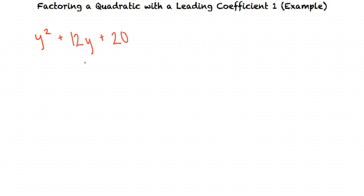This is an example video for factoring a quadratic with a leading coefficient of 1. If we're given the quadratic y squared plus 12y plus 20, we want to be able to get it into factored form. M and n will be numbers, and to find what numbers we put in these places, we will have to determine what numbers multiply to 20 and add to 12.